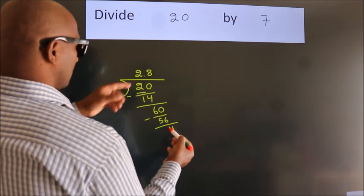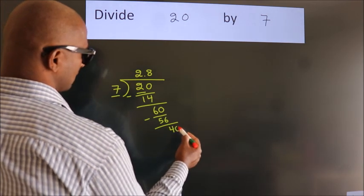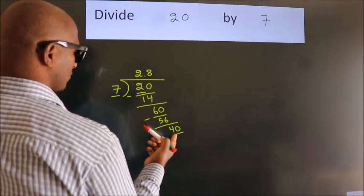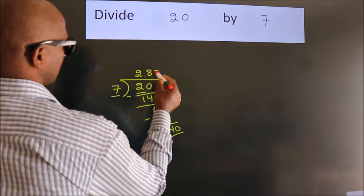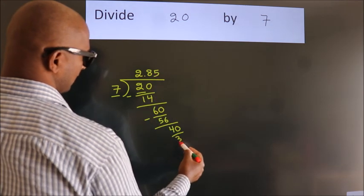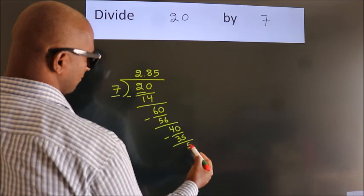After this, we already have the decimal. So directly take 0. So 40. A number close to 40 in 7 table is 7 5s 35. Now we subtract. We get 5.